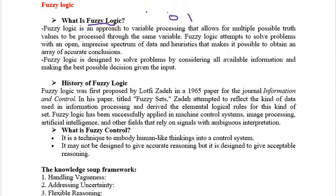Fuzzy logic is designed to solve problems by considering all available information — all the results which are there. From all available data, it considers the truth values and makes the best possible decision given the input. From all available information, they consider the best output. They take the best value from all the available information and consider that as the overall final result.